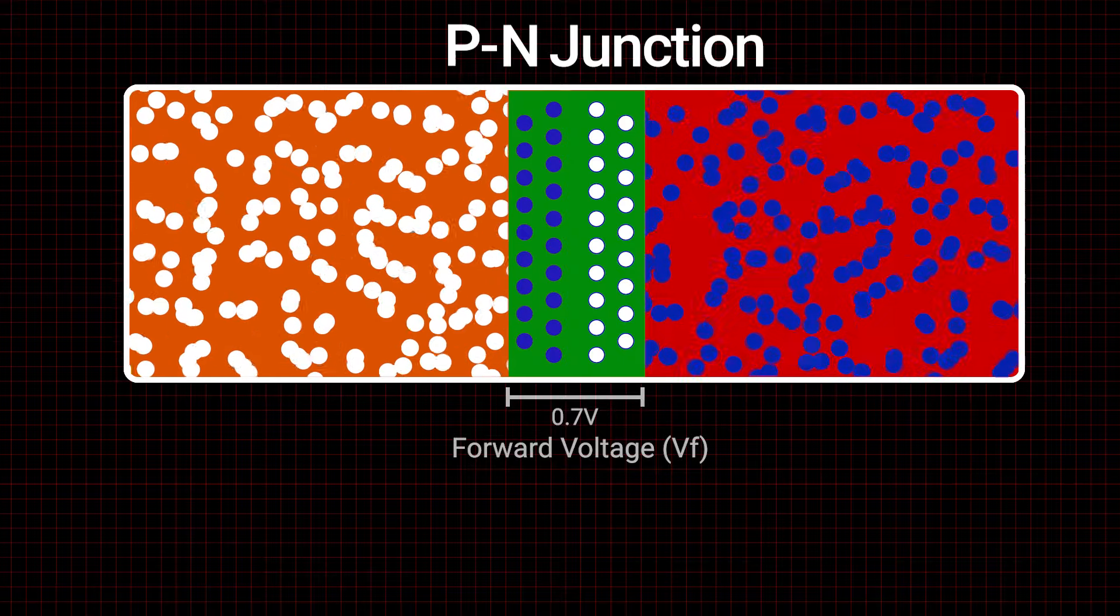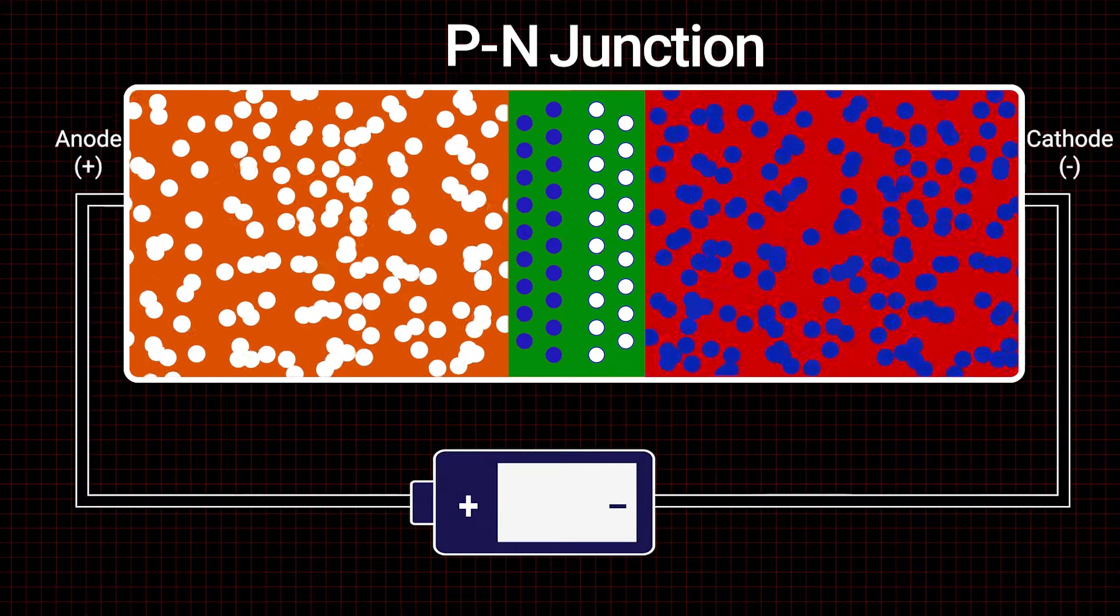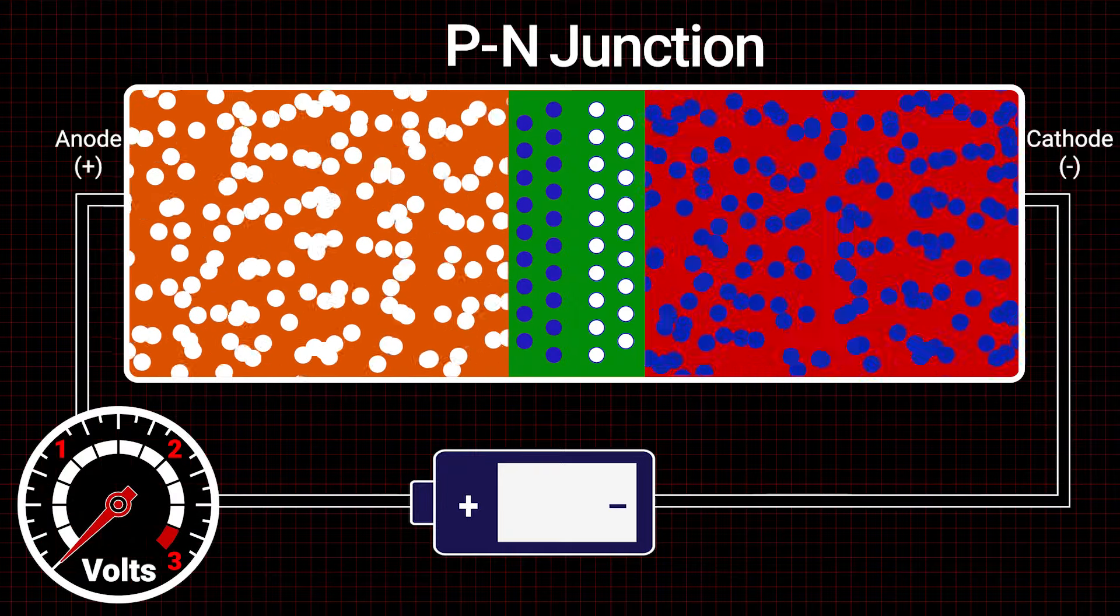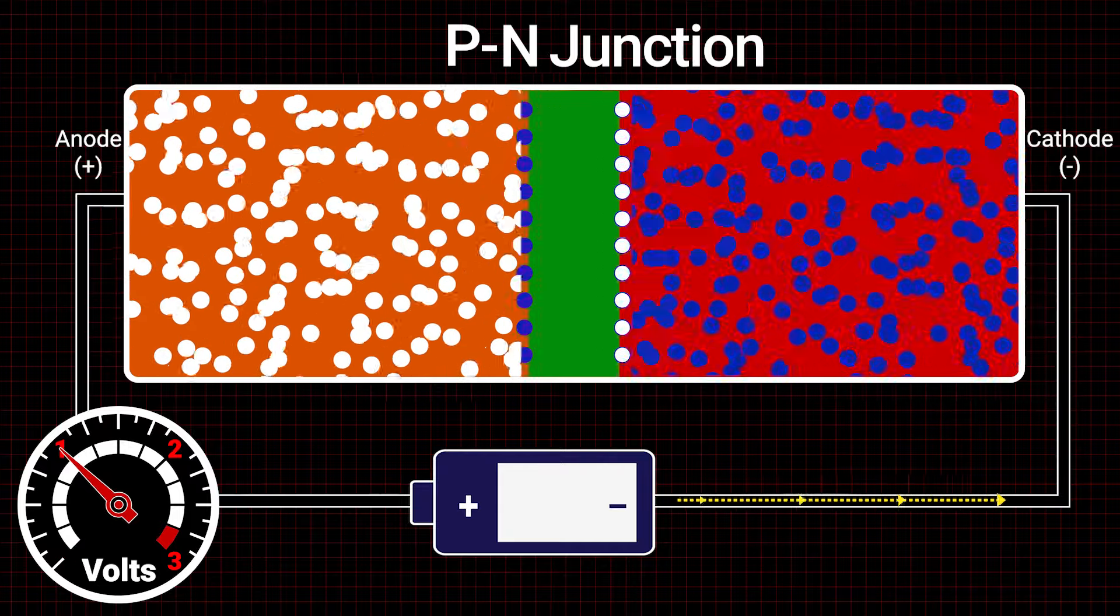Now if we connect a voltage source in forward bias, negative going to the cathode and positive going to the anode, voltage will be allowed to pass through the diode. However, the source voltage must exceed 0.7 volts or it will not be able to pass through the depletion region.